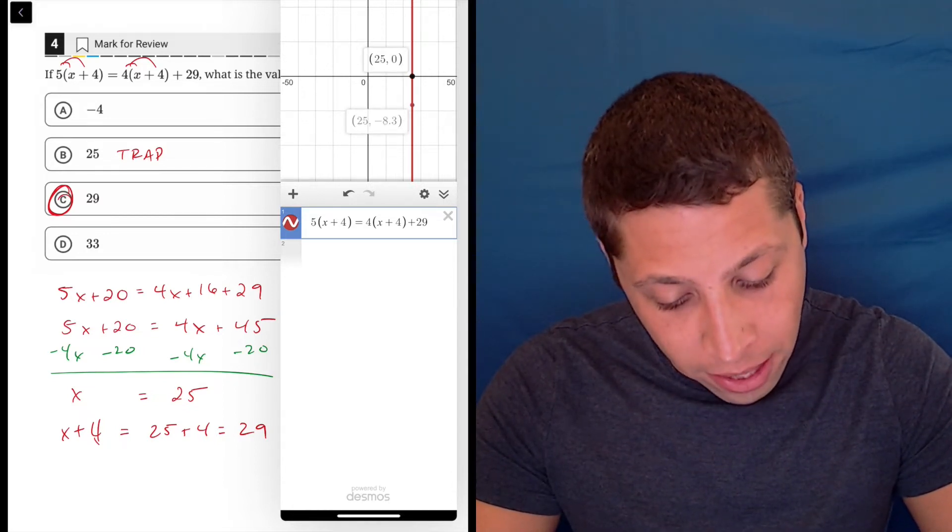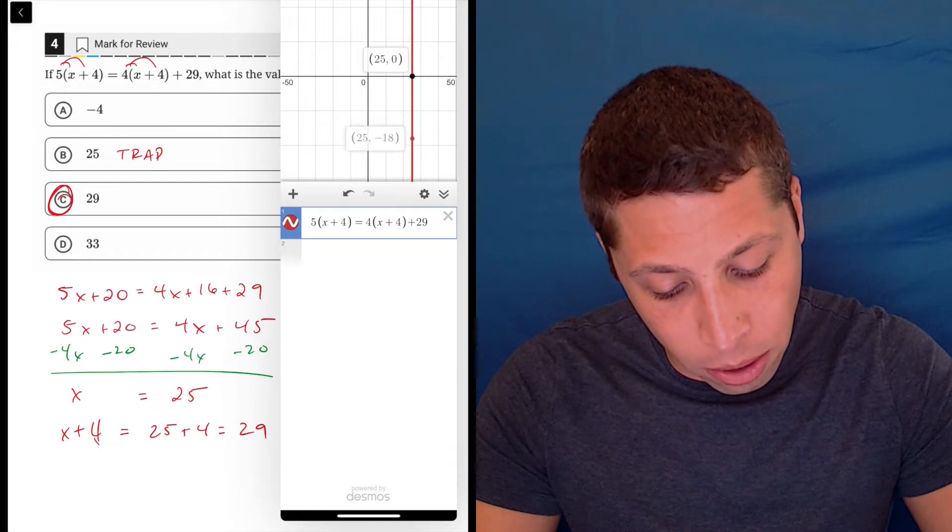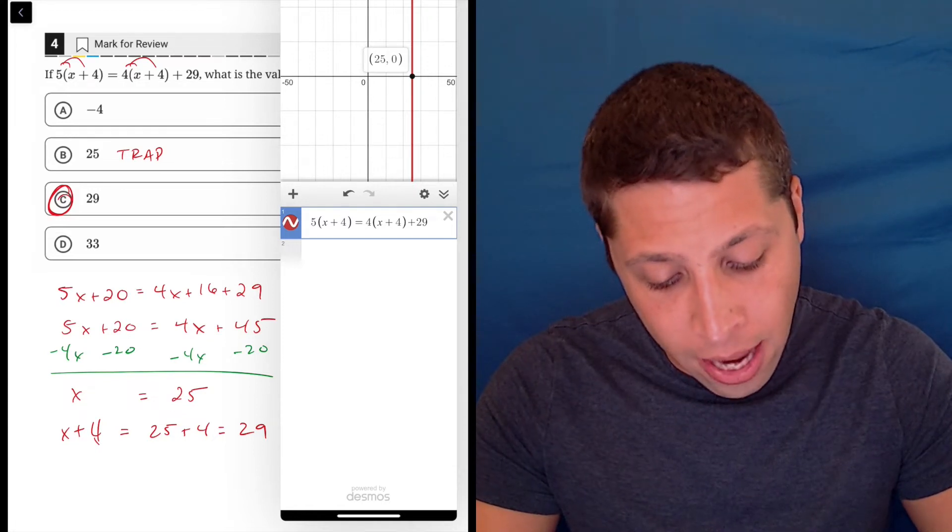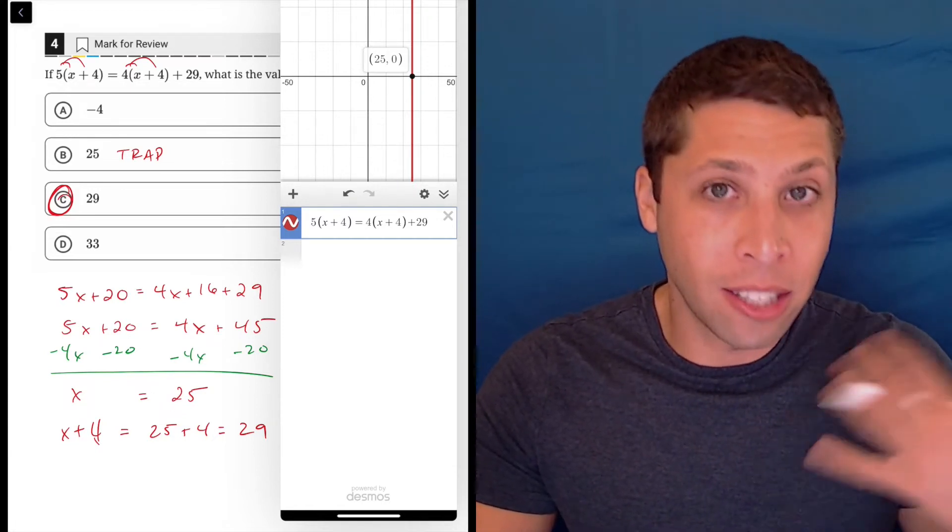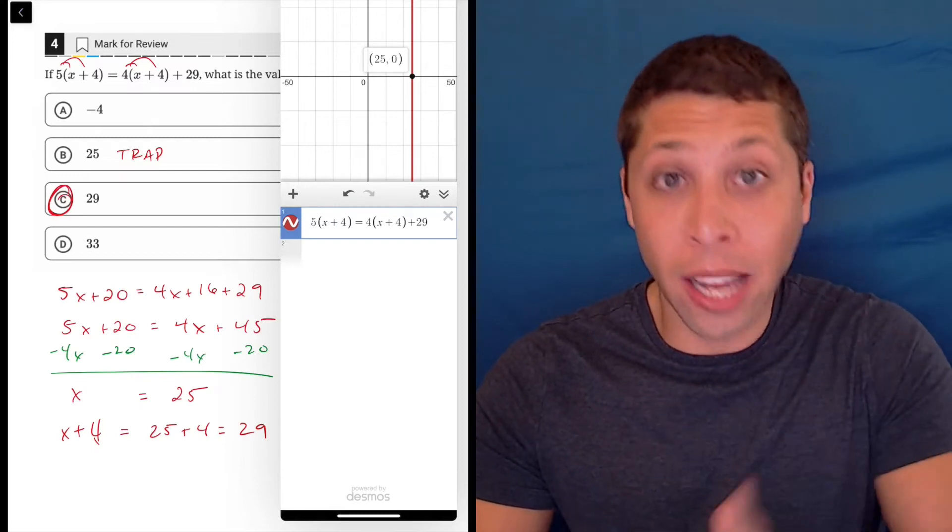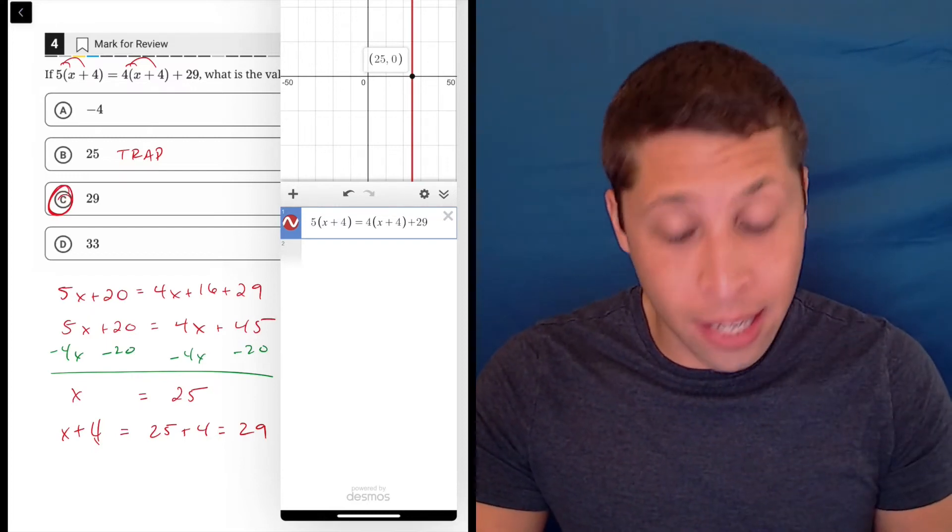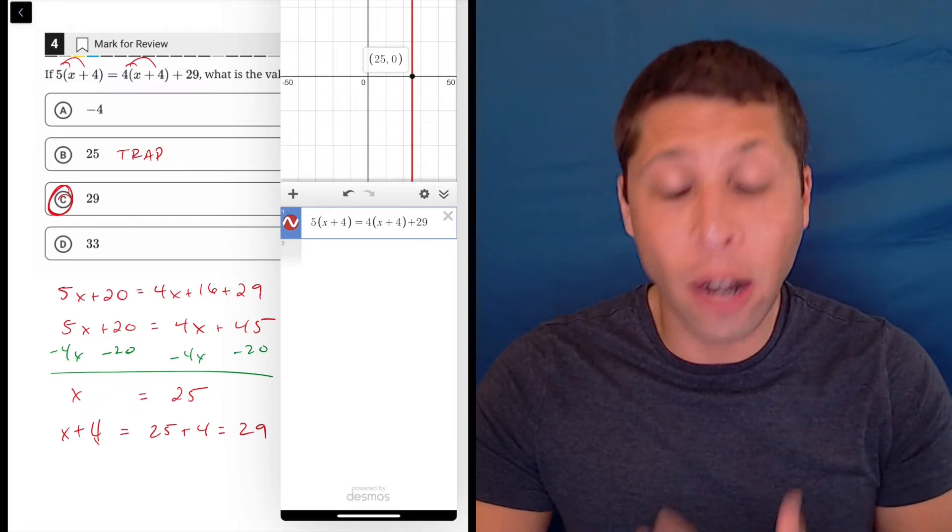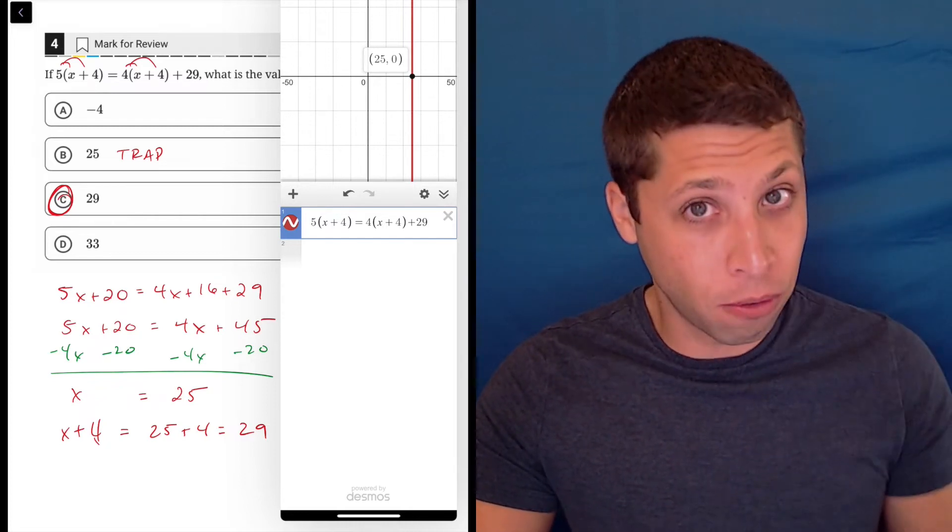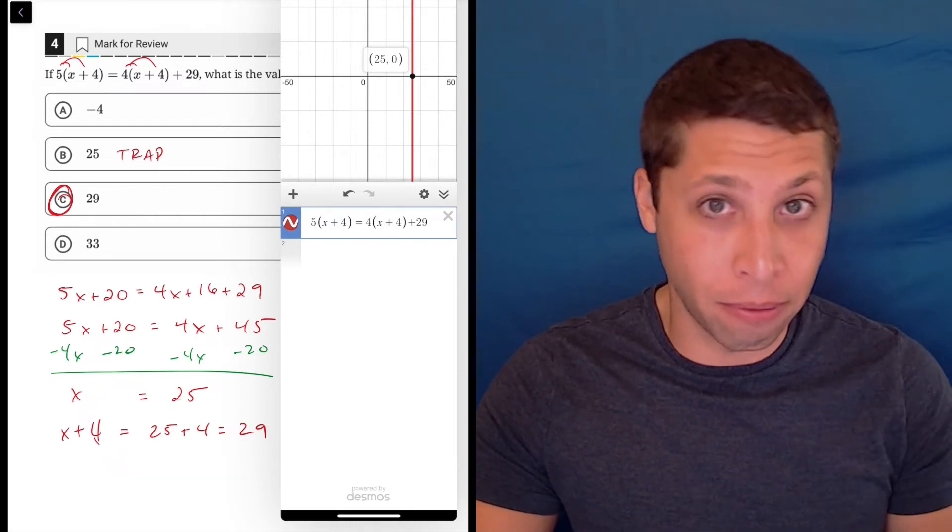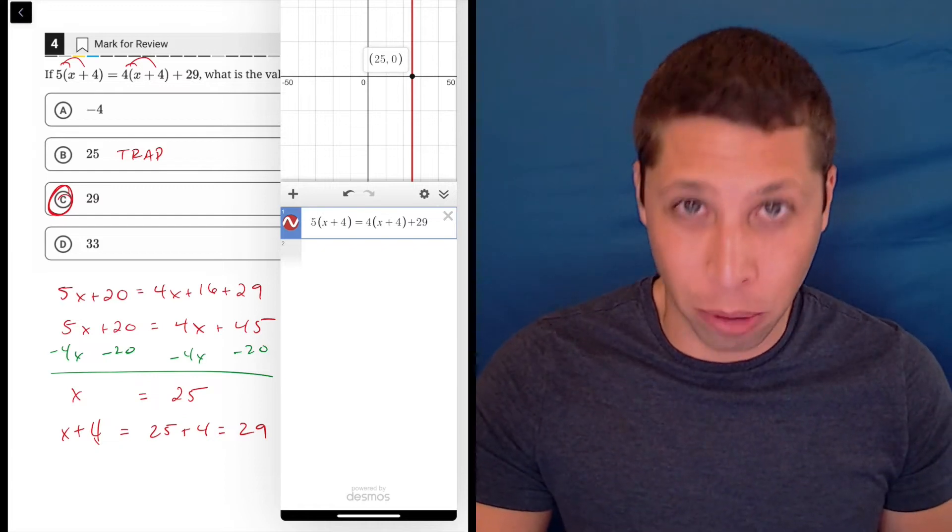There we go. If I go up and down a line, you can see 25 is the x coordinate no matter where I am on this line. So it's just solving it for you, but just like with the algebra, the trap exists. 25 is the value of x. They don't want the value of x. They want x plus 4. And so you've got to be able to add the 4 in at the end and not forget that that's what they wanted.